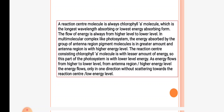A reaction center molecule is always a chlorophyll a molecule, which is the longest wavelength absorbing or lowest energy absorbing form. The flow of energy is always from higher level to lower level. In a multi-molecular complex like a photosystem, the energy absorbed by the group of antenna region pigment molecules is greater in amount, so the antenna region is at a higher energy level. The reaction center, consisting of a chlorophyll a molecule, is at a lower energy level. Therefore, from the antenna region, energy flows only in one direction without scattering towards the reaction center.